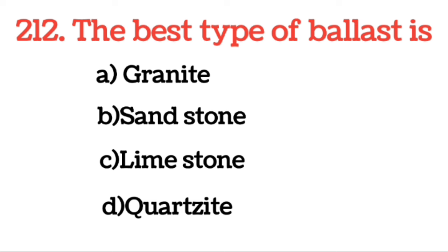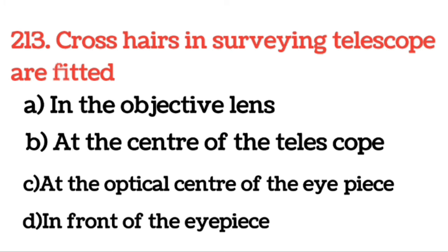Next question: Cross hair in a surveying telescope — where are they fitted? Cross hair जो surveying telescope में हम use करते हैं वह eye piece के सामने fitted होता है।